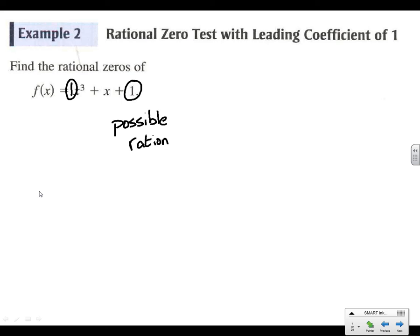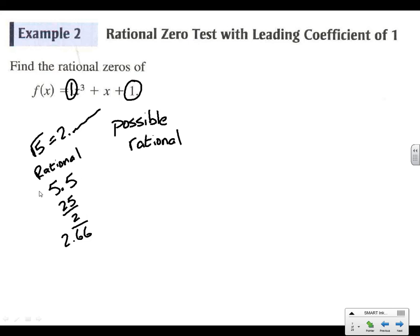That's important because there can be irrational ones, like the square root of 5, which is irrational because the decimal goes on and on. A rational number, as a reminder, means it's either going to stop — like 5.5 — or we can put it in a fraction, like 25 over 2. Or if the decimal repeats forever, that's also rational. If the decimal goes on forever with different numbers, non-repeating, it's irrational.